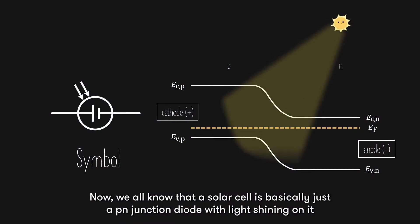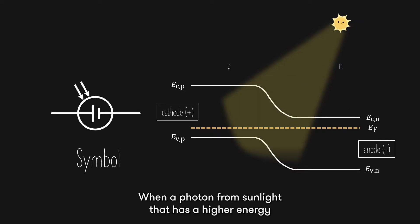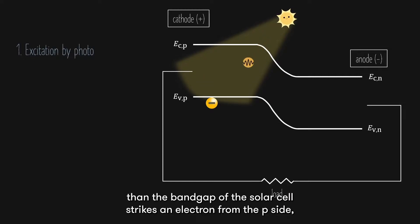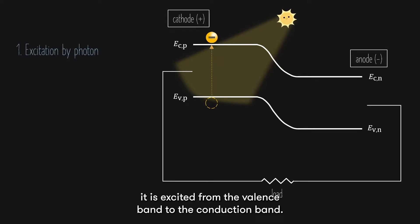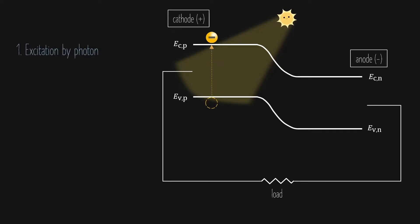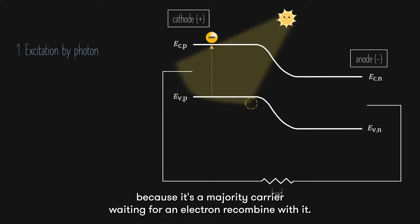We all know that a solar cell is basically just a PN junction diode with light shining on it. When a photon from sunlight that has a higher energy than the bandgap of the solar cell strikes an electron from the P side, it is excited from the valence band to the conduction band. We now have a hole in the valence band. This hole freely wanders around the valence band because it's a majority carrier, waiting for an electron to recombine with it.